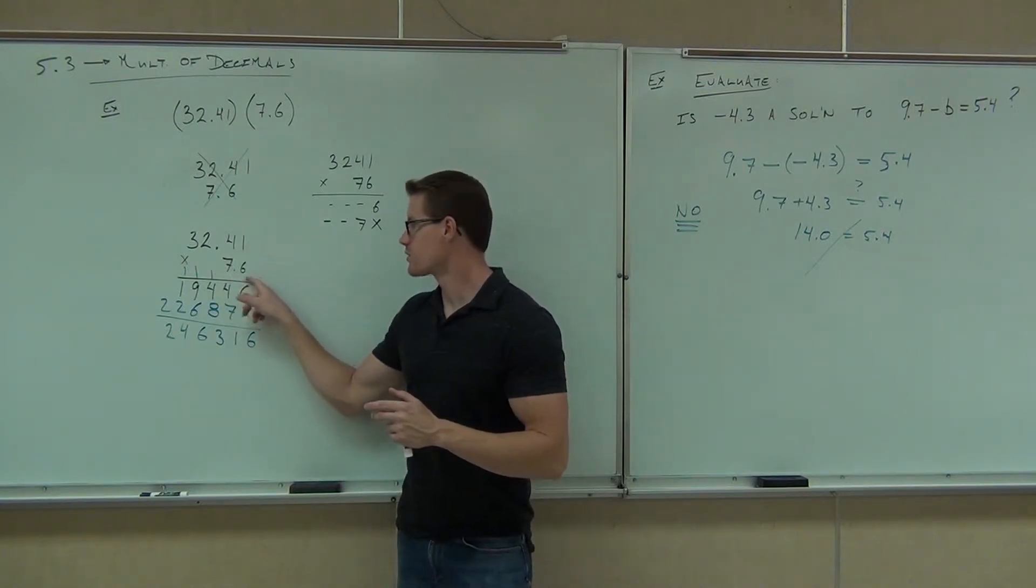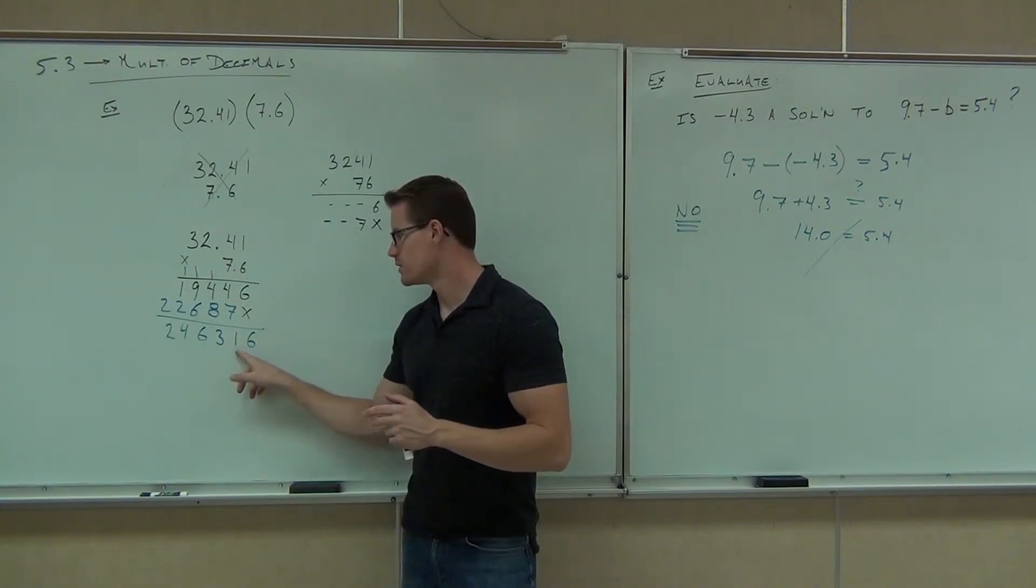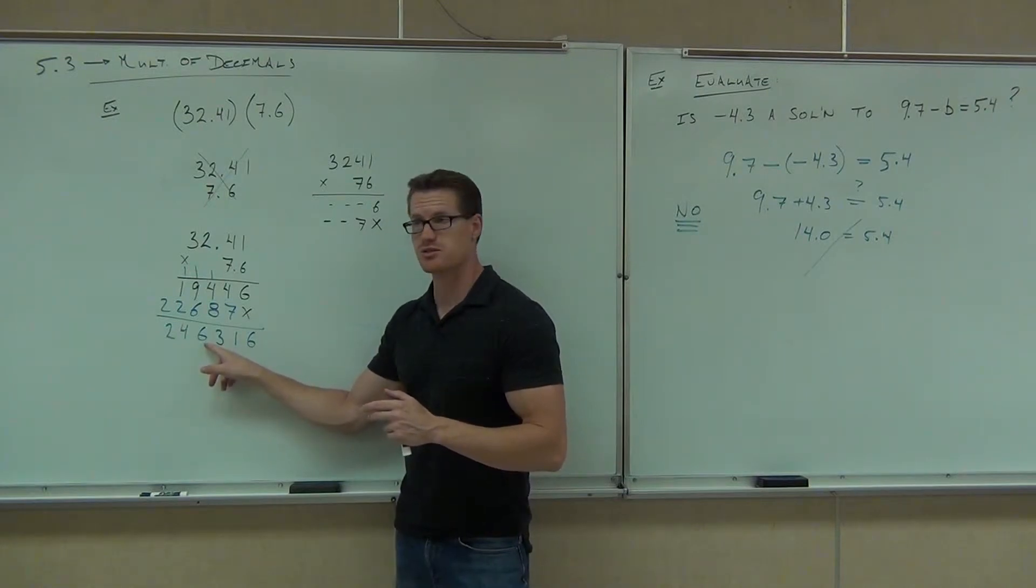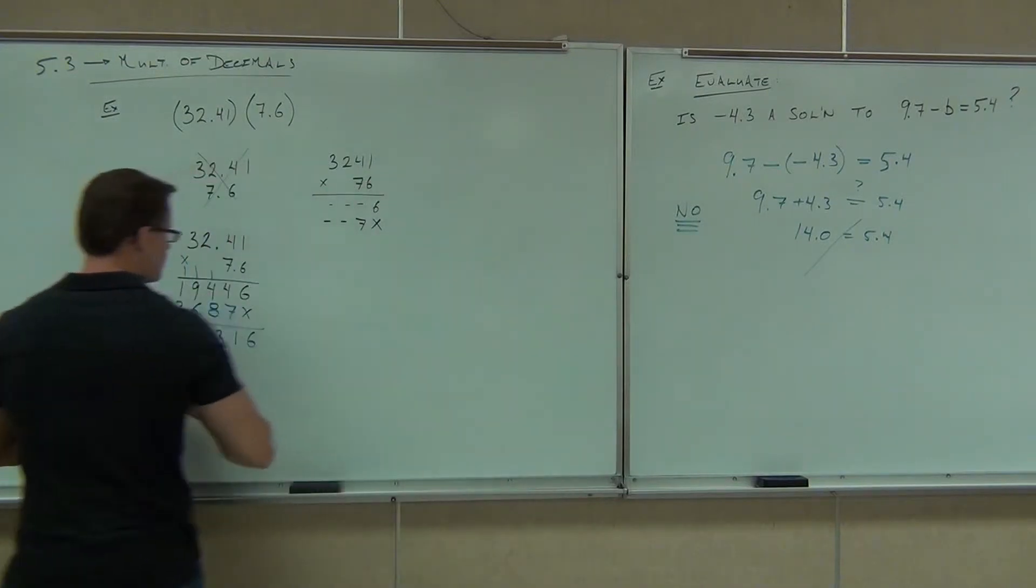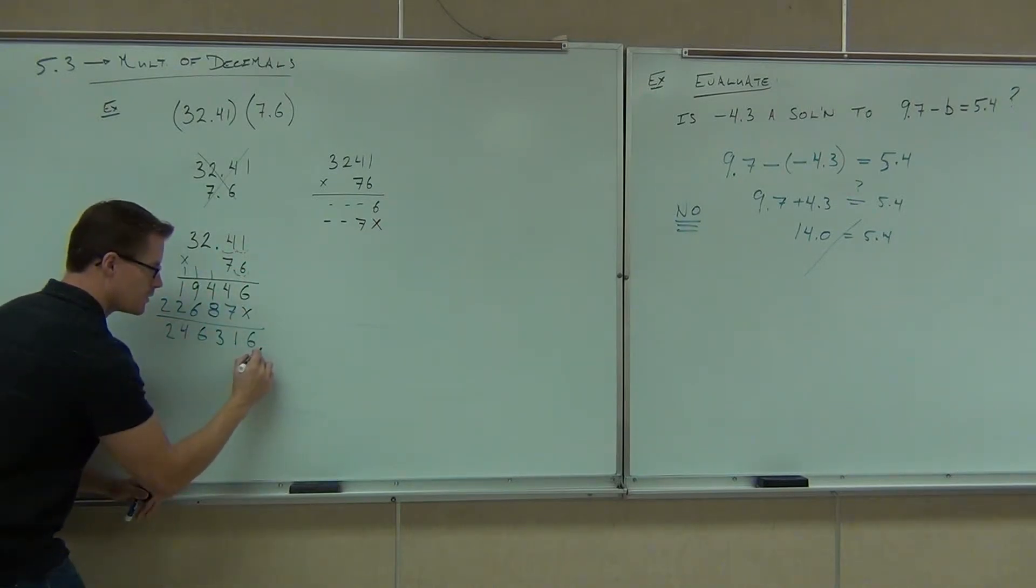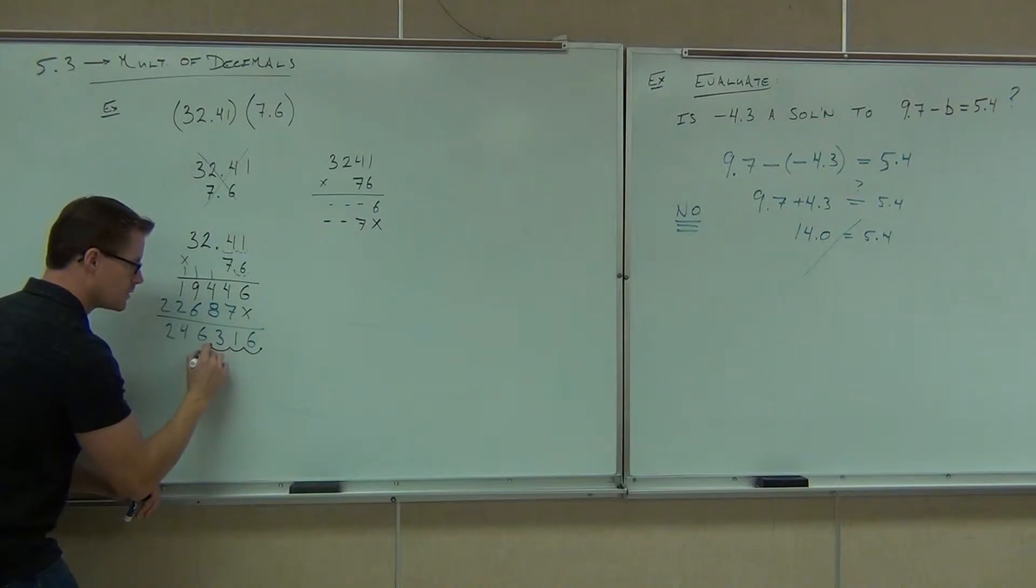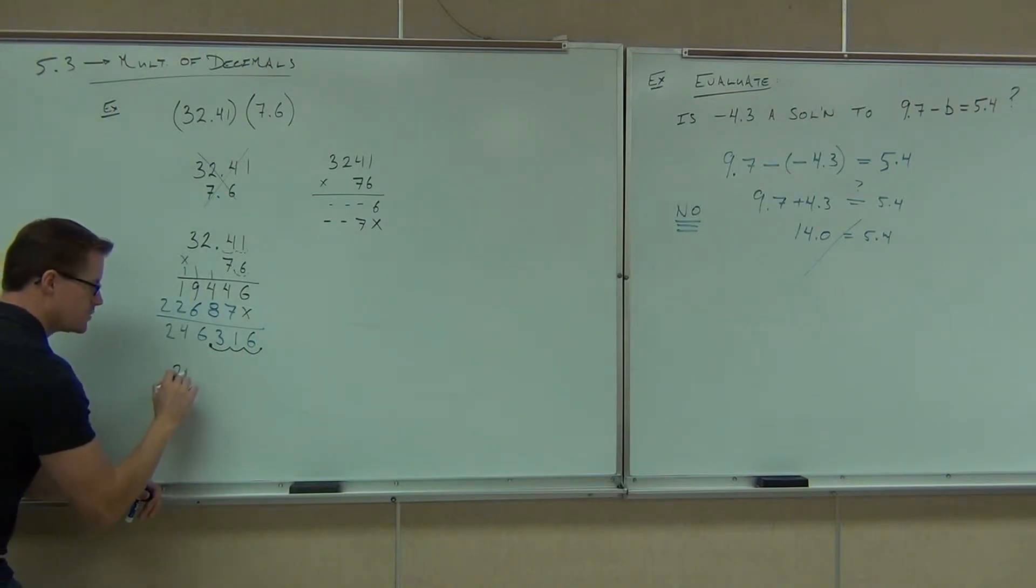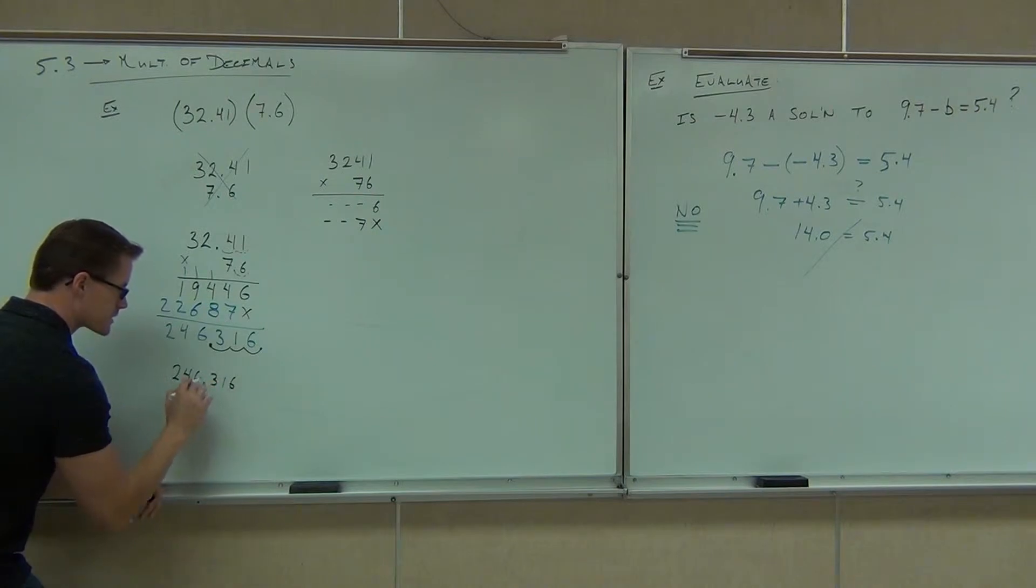Move that decimal exactly the same number of places that you just counted. If you went 1, 2, 3, you're going to go 1, 2, 3. And that's where your decimal place goes. So from here, this would be 1, 2, 3 total moves. 1, 2, 3 moves. Your answer is 246.316.